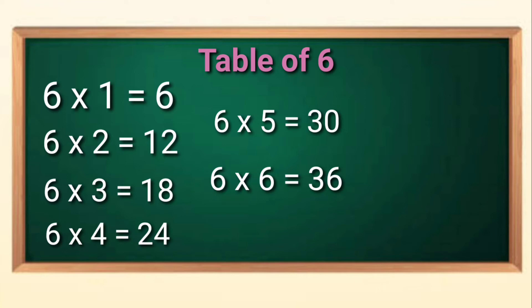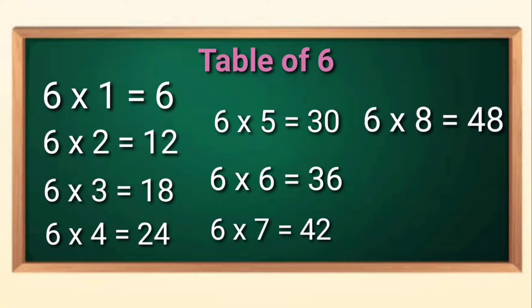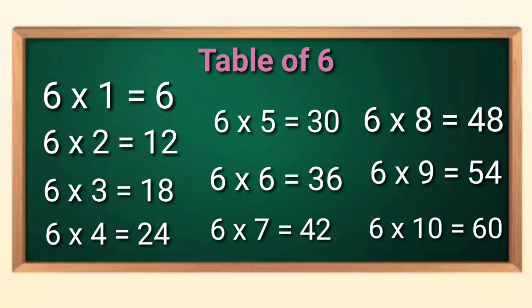Six sixes are thirty-six. Six sevens are forty-two. Six eights are forty-eight. Six nines are fifty-four. Six tens are sixty.